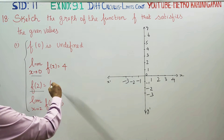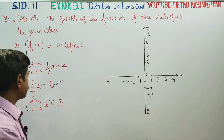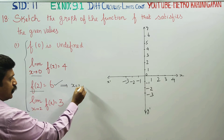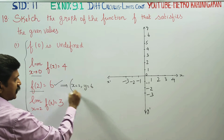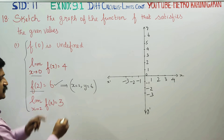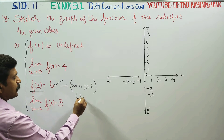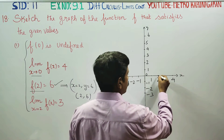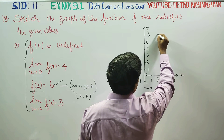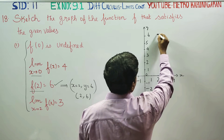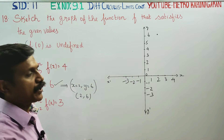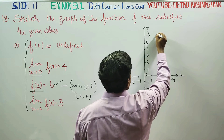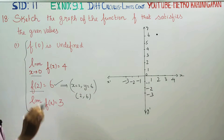First of all, f(2) is equal to 6 is very easy to plot. When x is equal to 2, y is equal to 6. This is the exact value — this is a dot, this is the first point. It is a very easy point because when x is equal to 2, y is equal to 6.